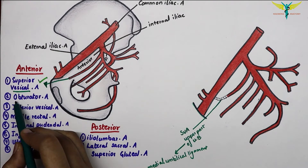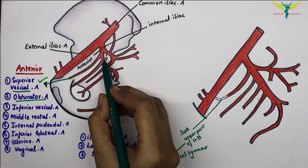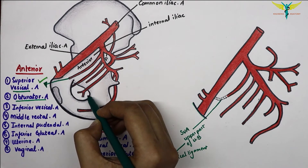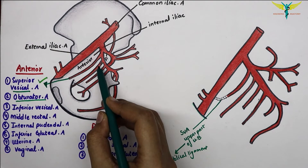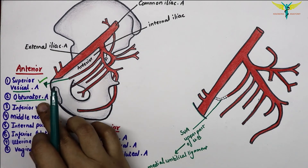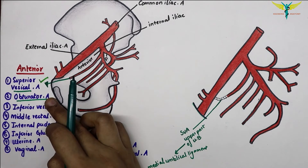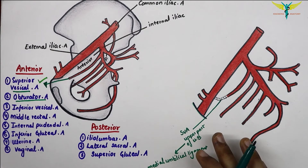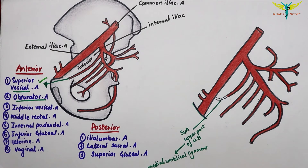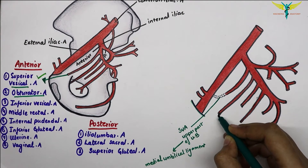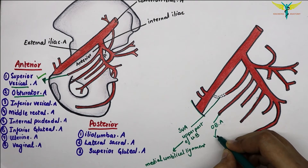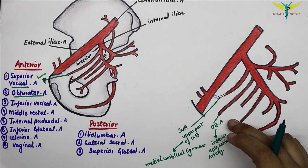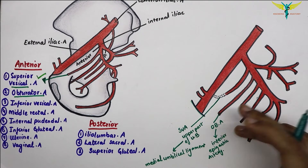The second branch is the obturator artery. It passes along the lateral wall of the pelvis along the obturator nerve, and leaves through the obturator canal. It gives an important pubic branch which anastomoses with the corresponding branch of the inferior epigastric artery. This anastomosis is also called the accessory obturator artery, and it can replace the obturator artery.